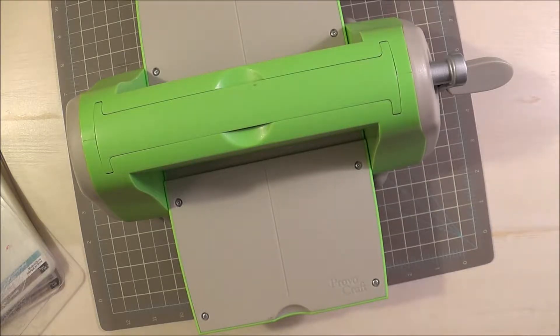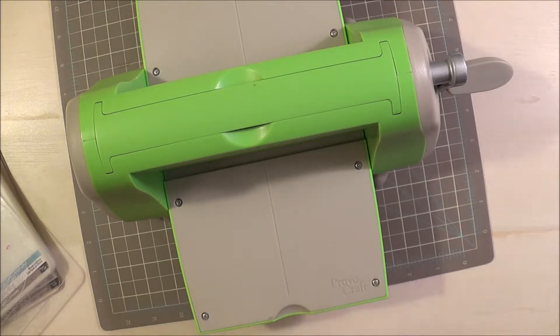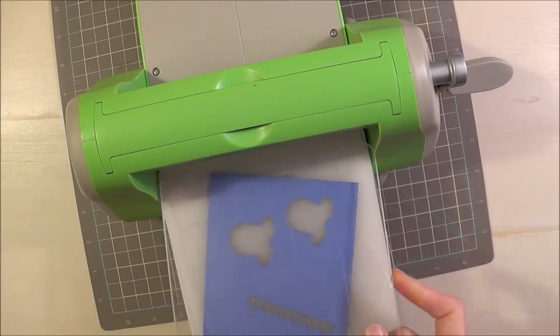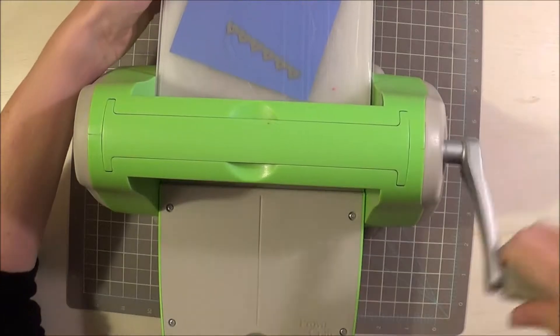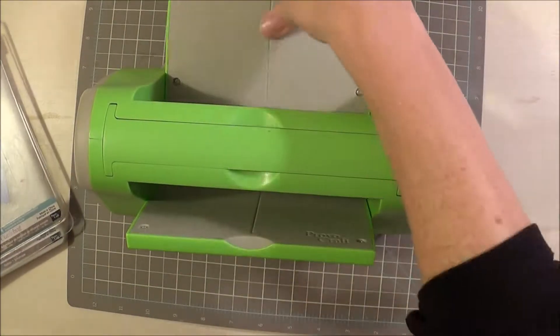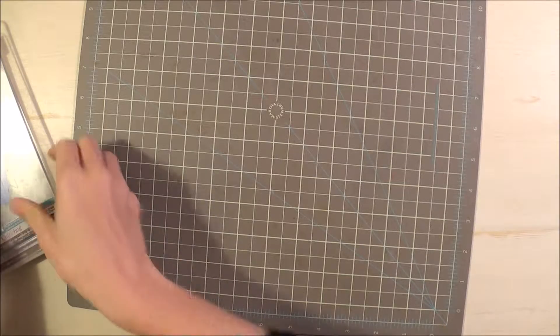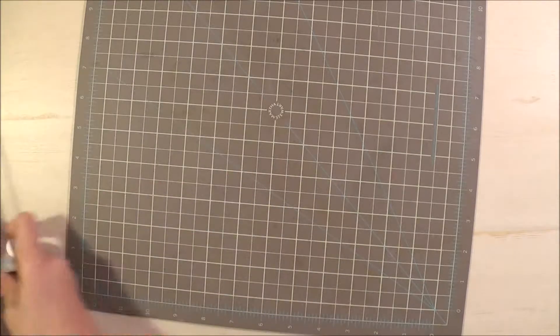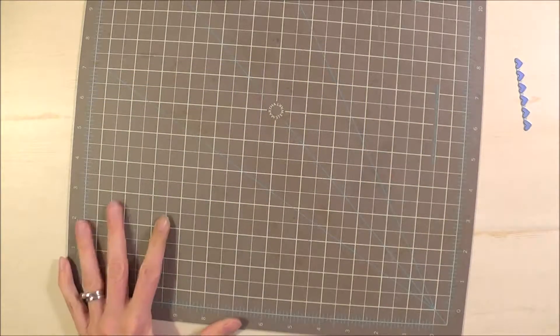And then while I have it out, I'm also going to cut some little hearts with this Lawn Fawn die. And that stitch border die was also from Lawn Fawn. So I'm going to run that through also. And it can just stay right in there.